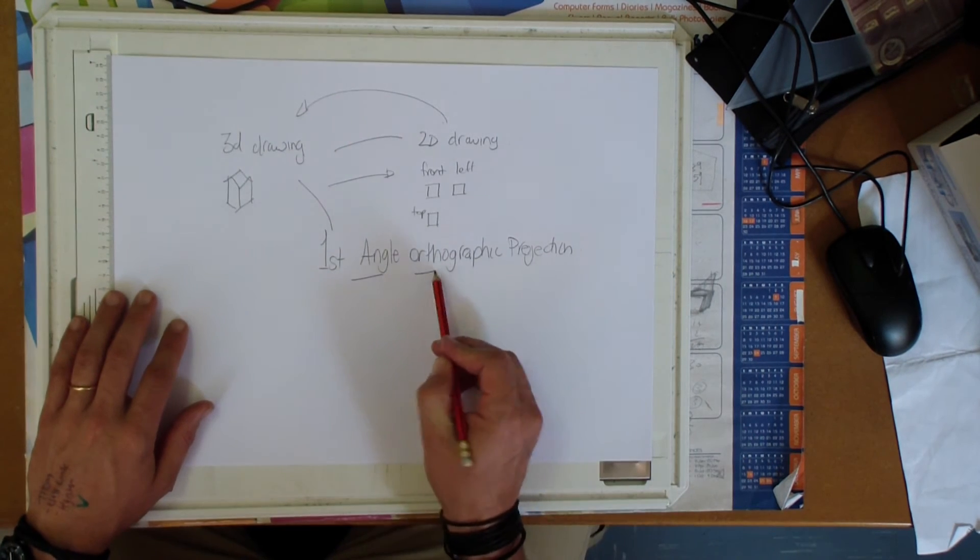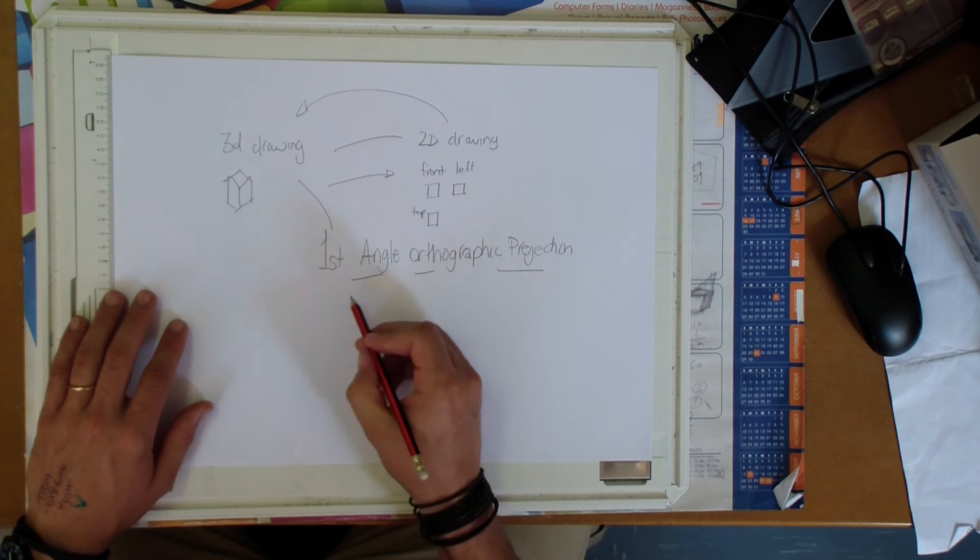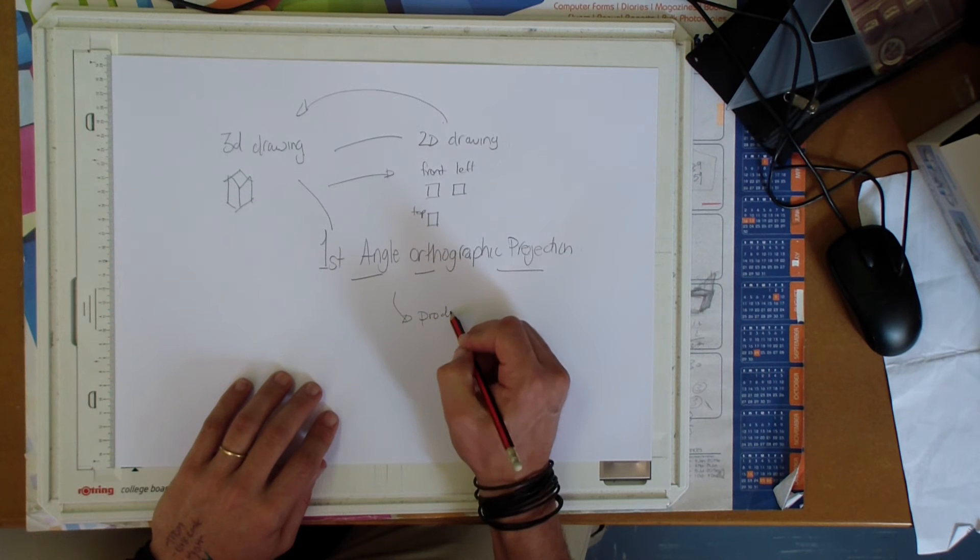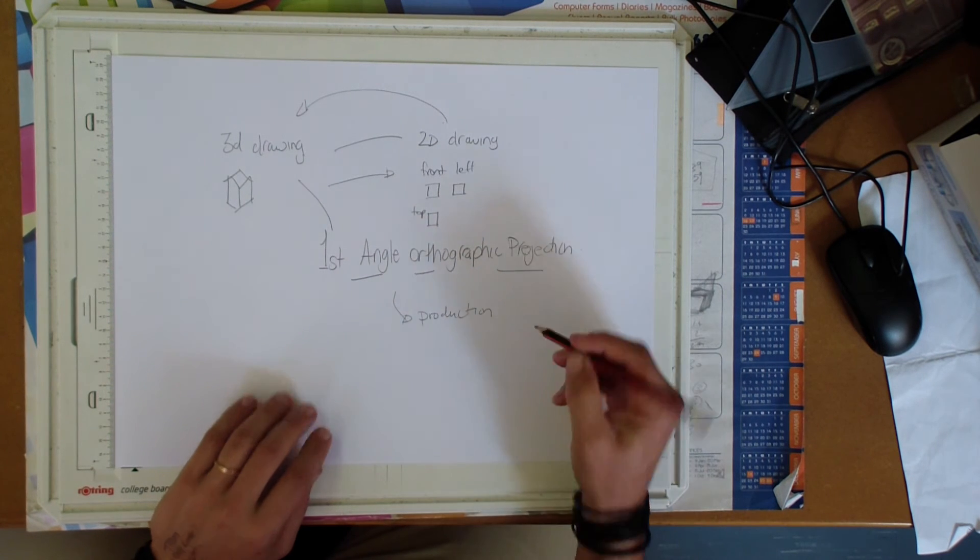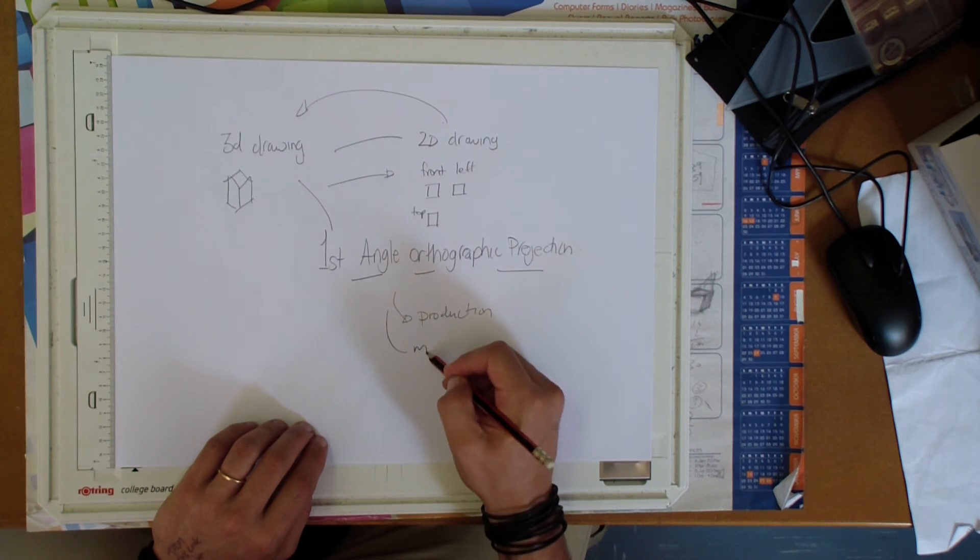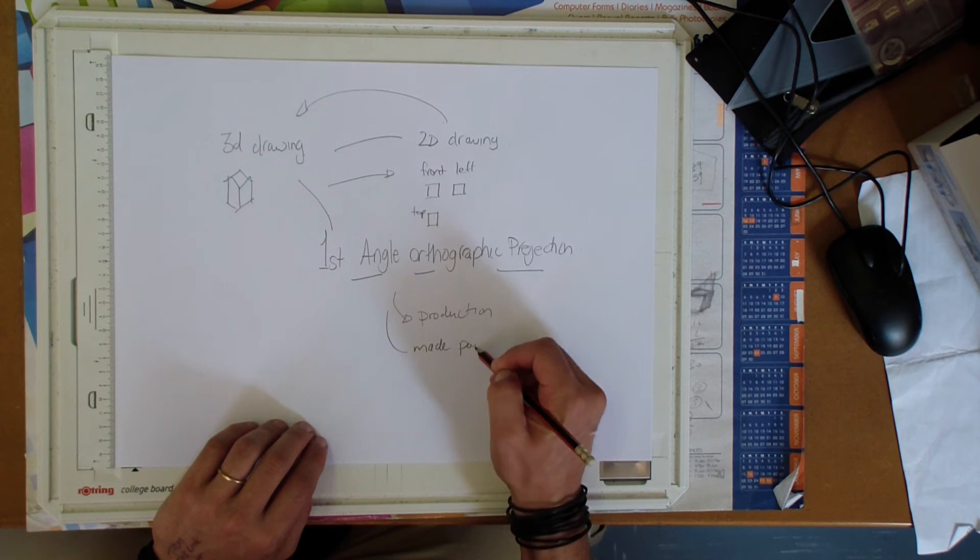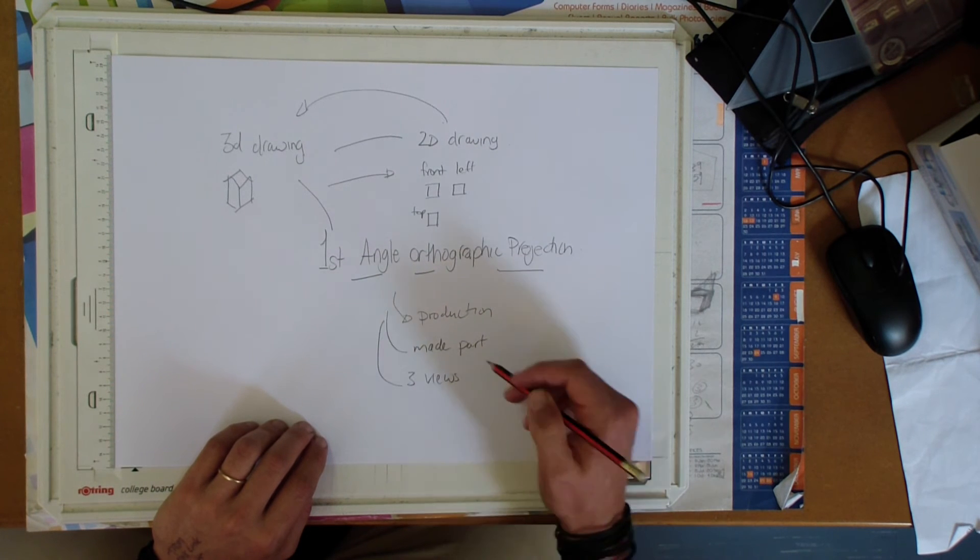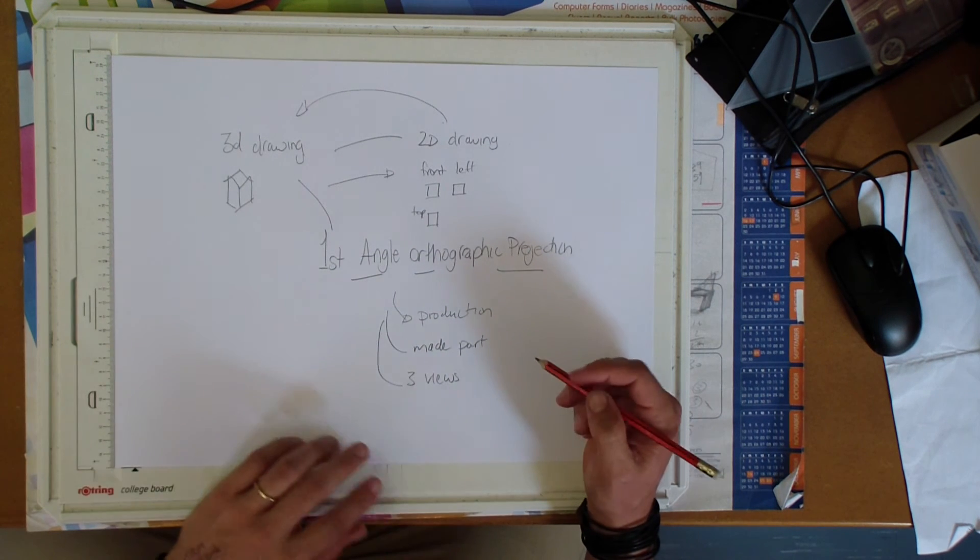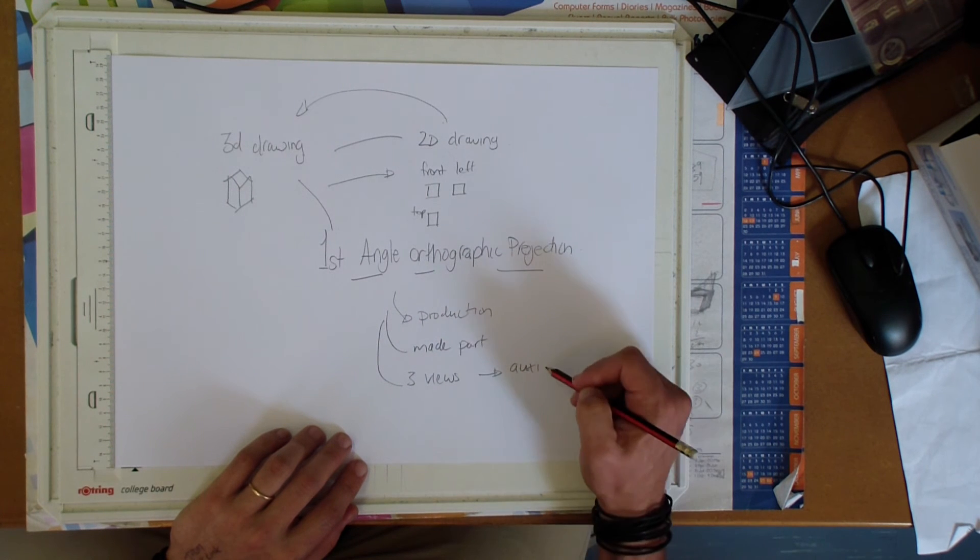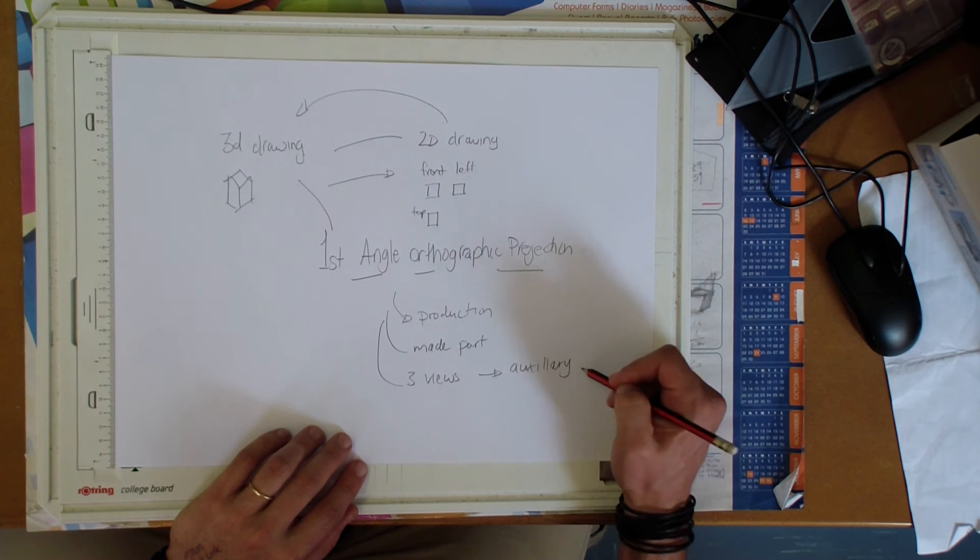What are these drawings usually used for? Well, most of the time, first angle orthographic drawing is a production drawing. It's going to be taken to a production shop and it's going to be actually made into a part. Three views are usually enough to build any part from. We may add an auxiliary view if we wish.